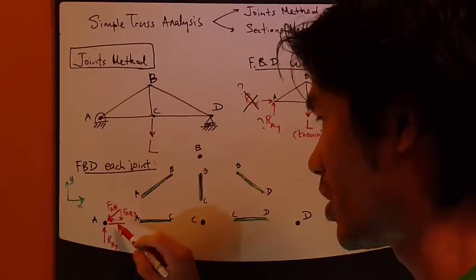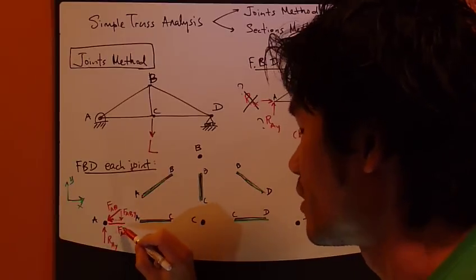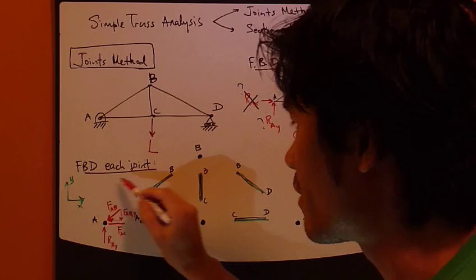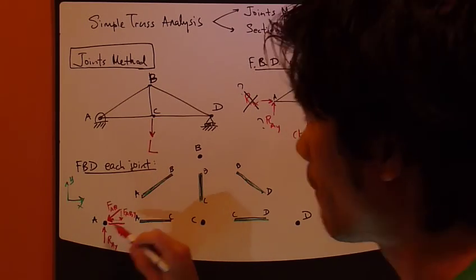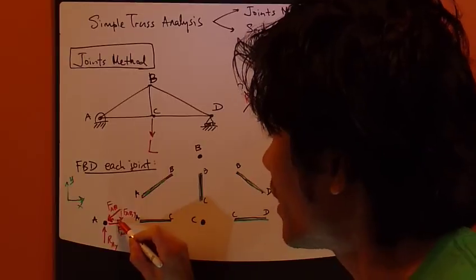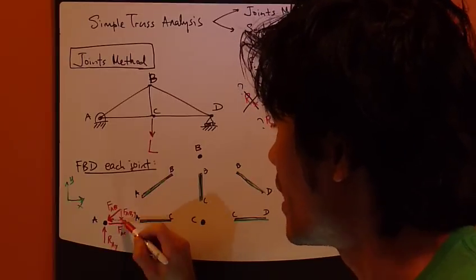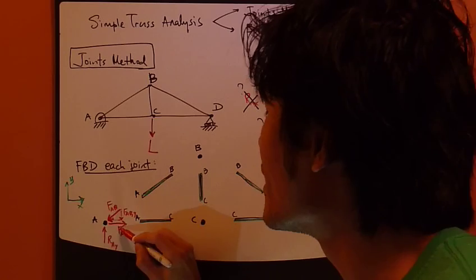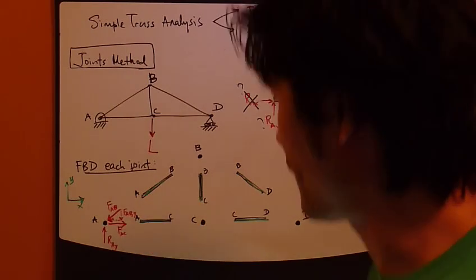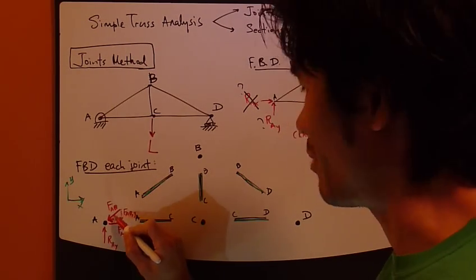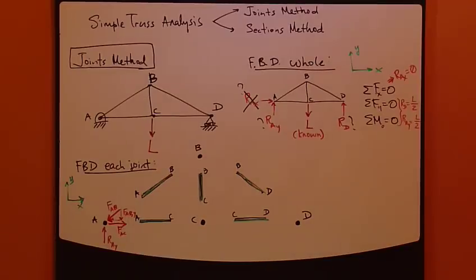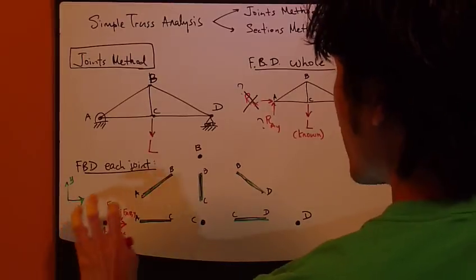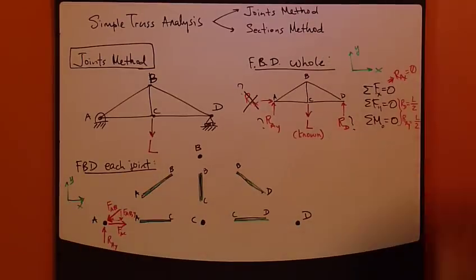Similarly, for Fac: something must counter the x-component of Fab, which points to the left. Therefore, Fac must point to the right to counter it. So the picture for joint A is now complete, and I can draw joint A separately as a free body diagram.